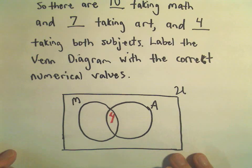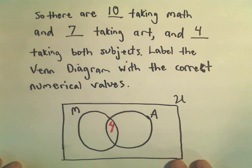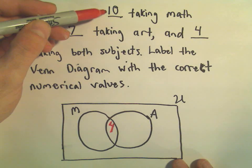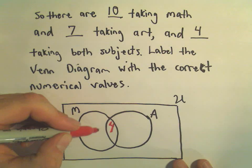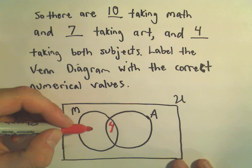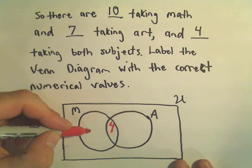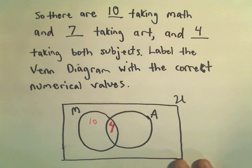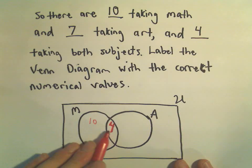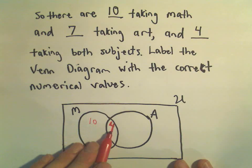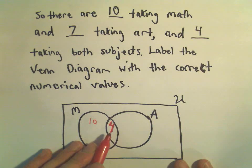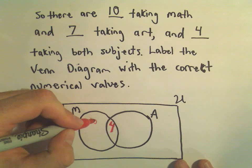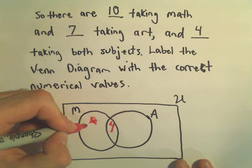Now you have to be careful. We said at the very beginning there are ten people taking math. So it would be easy just to stick a ten over here and say, well, there's ten people taking math. But the problem is if you add up the numbers inside the circles, so suppose we did put a ten in there. If you add these numbers together, it means now that there are 14 people total taking math.